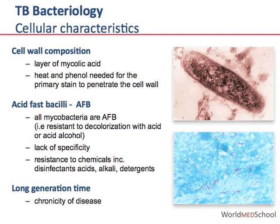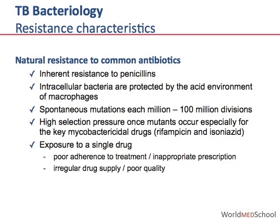Mycobacteria have a slow generation time of approximately 24 hours, compared to other common environmental bacteria such as E. coli which replicate every 20 minutes. This long generation time contributes to the chronicity of TB disease. Tuberculosis bacilli have natural resistance to common antibiotics, including inherent resistance to penicillins. Because they are intracellular bacteria, they are protected by the acid environment of macrophages against drugs such as streptomycin. Spontaneous mutations occur every million to 100 million divisions, allowing populations of organisms resistant to individual drugs to emerge.